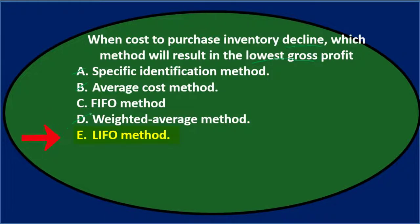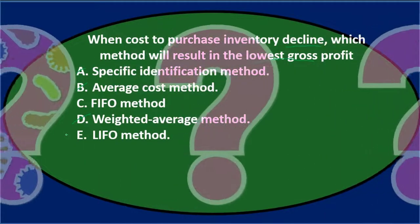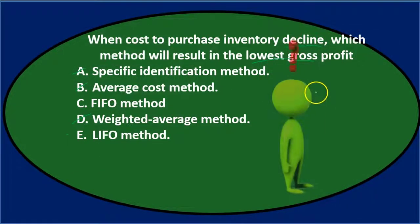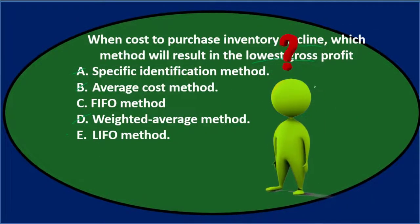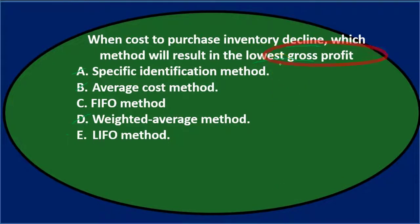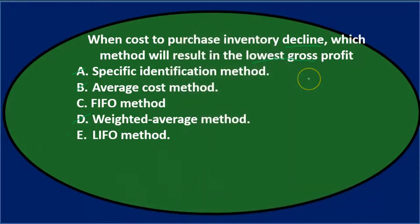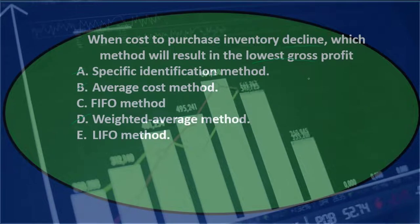Option E is last in, first out, or LIFO. When these problems say lowest or highest, we're usually deciding between FIFO or LIFO — the average is usually in the middle. The default framework to think about this: under normal rising-price conditions, driven by inflation, first in, first out will make you look better, and last in, first out will typically make you look worse.